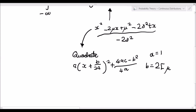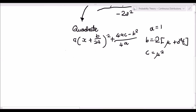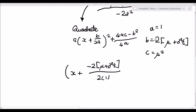b is negative 2 times mu plus sigma squared t, and c is equal to mu squared. So let's plug this into the formula. Since a is 1, we're going to have x plus negative 2 times mu plus sigma squared t, divided by 2 times a — and a is 1 — so divided by 2, squared, plus 4ac minus b squared.